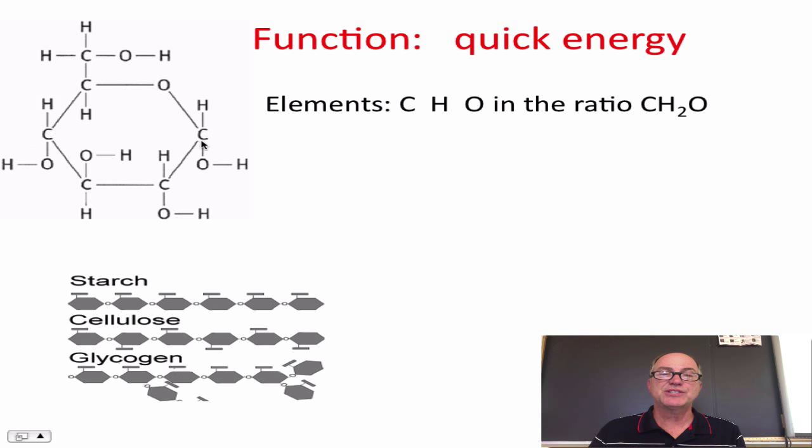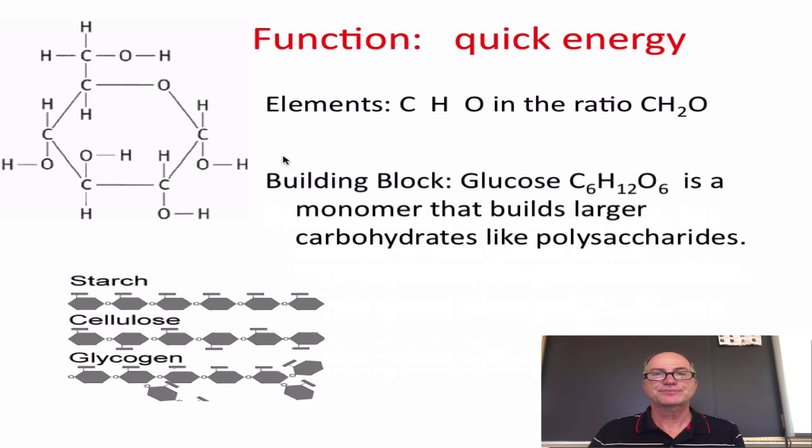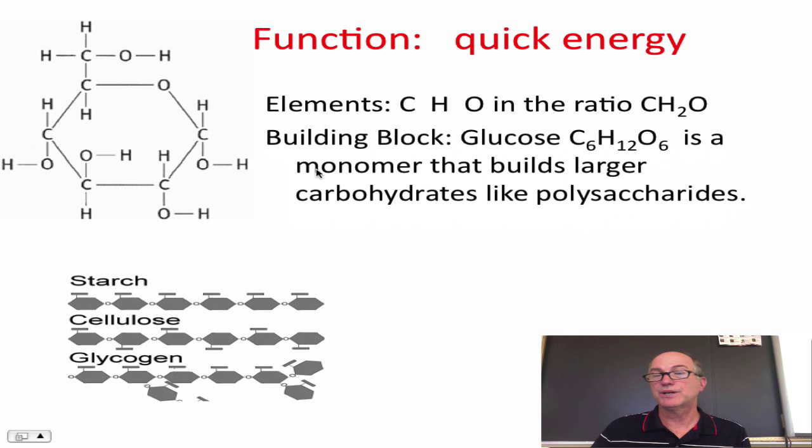So if you notice, if you counted on this glucose molecule, which makes a ring structure, there's six carbon atoms. There's also six oxygen atoms. And there's twice as many hydrogens, or 12. So the formula for glucose is, easy way to write this, C6H12O6. And glucose is the monomer that builds larger carbohydrates, like these polysaccharides shown down here.